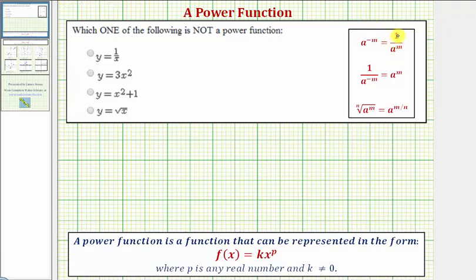To help remember this exponent property, we can write a raised to the power of negative m as a fraction with a denominator of one. So if we move this exponential expression down to the denominator, it changes the sign of the exponent. Again, a raised to the power of negative m equals one over a raised to the power of positive m. Similarly, if we have one over a raised to the power of negative m, this is equal to a raised to the power of positive m. So if we move this up to the numerator, it changes the sign of the exponent. So if we have an exponential expression and we move it across the fraction bar, it will change the sign of the exponent.